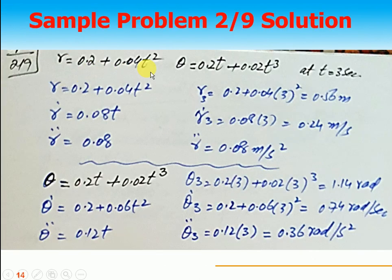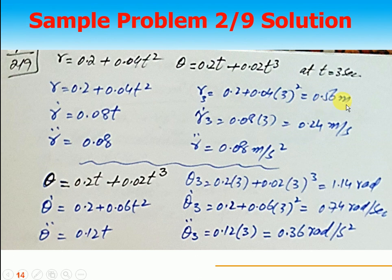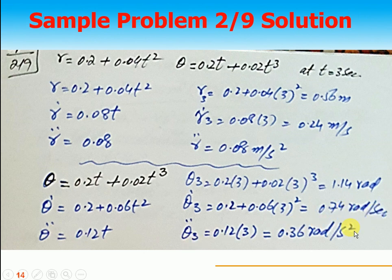The arm rotates angularly by theta and the slider moves along the radial direction. We need to find velocity and acceleration of this slider. Given r = 0.2 + 0.04t², taking the first derivative gives ṙ = 0.08t and the second derivative gives r̈ = 0.08 m/s². At t = 3s: r = 0.56 m, ṙ = 0.24 m/s, r̈ = 0.08 m/s². For theta: θ = 0.2t + 0.02t³; θ̇ = 0.2 + 0.06t²; θ̈ = 0.12t. At t = 3s: θ = 1.14 rad, θ̇ = 0.74 rad/s, θ̈ = 0.36 rad/s².